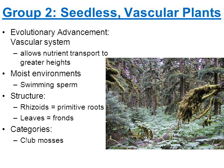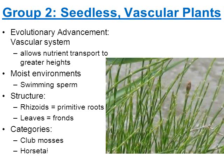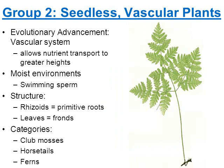A couple of categories before we go into the life cycle: the seedless vascular plants include club mosses — even though they have the word 'moss' in them, they're not true mosses; they were misnamed early in our classification and they do have a vascular system. There are also horsetails. But the main topic we're going to focus on today are the ferns, which we'll use to represent the seedless vascular plant.